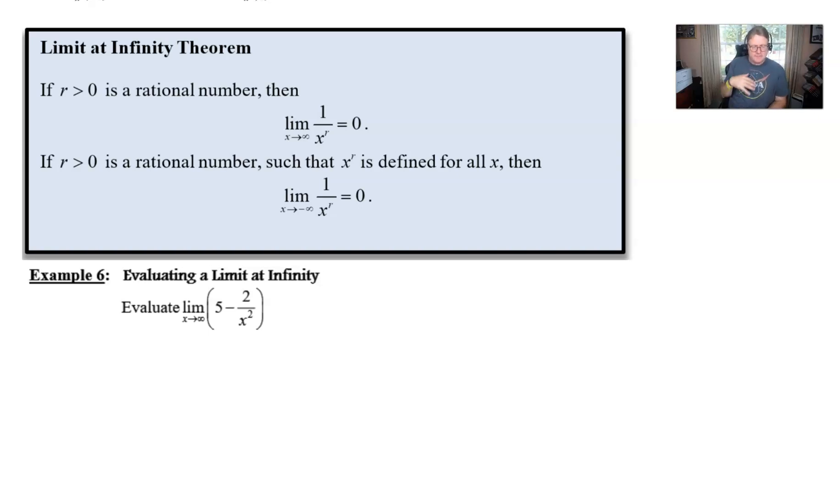Now by the same token, if R is another rational number—and of course we do have to preface that that rational number has to be positive, that's very important—so we also realize that as x approaches negative infinity, 1 over x to the R is equal to 0. Now with that second part of the theorem we need to make sure that we make special reference to the fact that the x to the R must be defined for all x, and the reason for that is we don't want to run into a problem where we have say an even valued denominator.